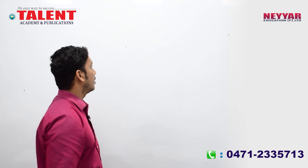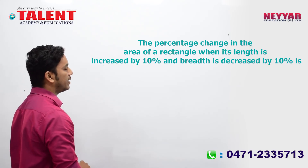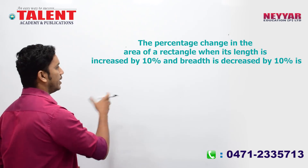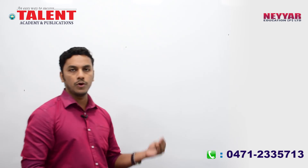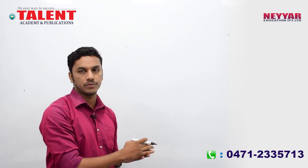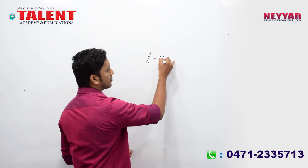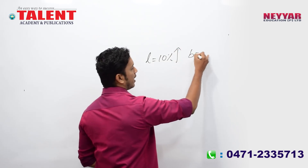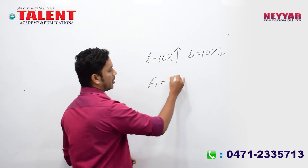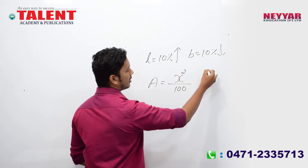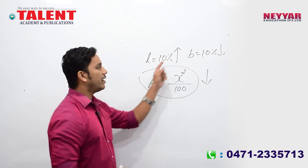The percentage change in the area of a rectangle when its length is increased by 10% and breadth is decreased by 10% is. In a rectangle, the length is increased by 10% and breadth is decreased by 10%.